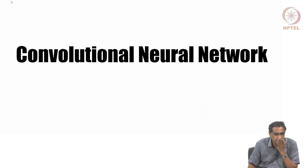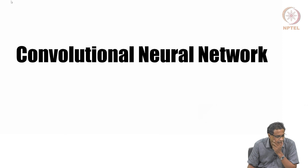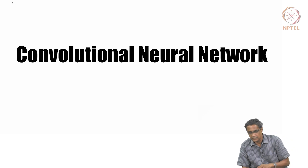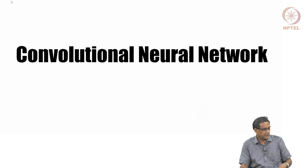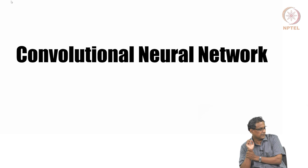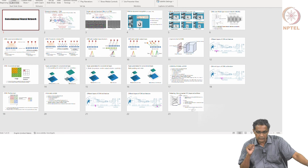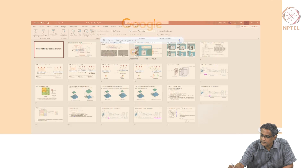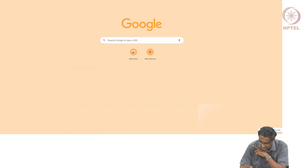Convolutional neural networks are again a neural network kind of family, except that, unlike the other one we saw till now, which is an MLP, there are certain things that change when you try to use a CNN. CNNs have been really good in terms of what they have been able to achieve, especially in the imaging domain.